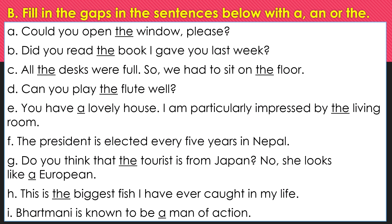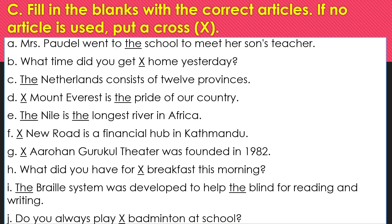C. Fill in the blanks with the correct articles. If no article is used, put a cross X. A. Mrs. Portal went to the school to meet her son's teacher. B. What time did you get X home yesterday? C. The Netherlands consists of 12 provinces. D. X Mount Everest is the pride of our country. E. The Nile is the longest river in Africa. F. X New Road is a financial hub in Kathmandu. G. X Arohan Garukul Theatre was founded in 1982. H. What did you have for X breakfast this morning? I. The Braille system was developed to help the blind for reading and writing. J. Do you always play X badminton at school?